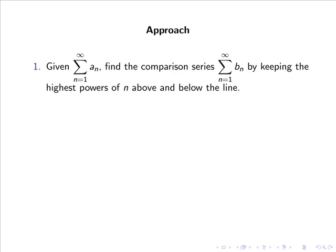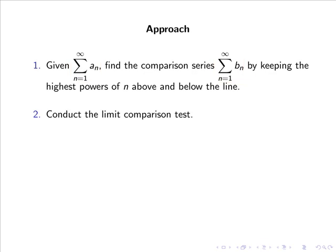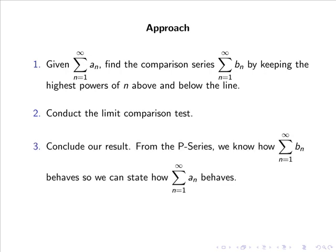The approach we will use is as follows. Given the series from 1 to infinity of an, we find the comparison series from 1 to infinity of bn by keeping the highest powers of n above and below the line of the general term of an. Then we conduct the limit comparison test — that is, the limit as n goes to infinity of an divided by bn. Then we conclude our result. From the p-series we know how the series from 1 to infinity of bn behaves, so then we can state how the series from 1 to infinity of an behaves.